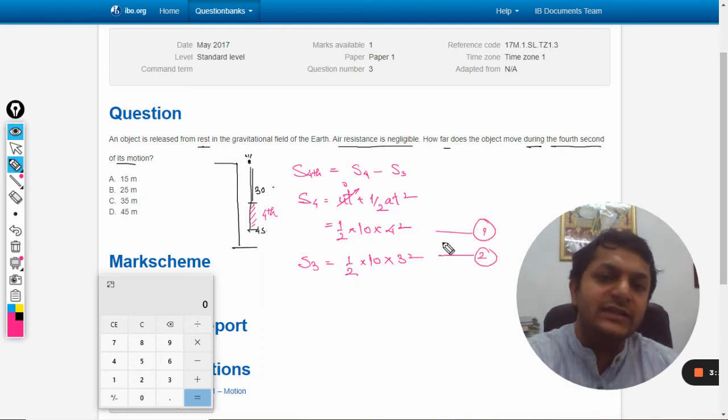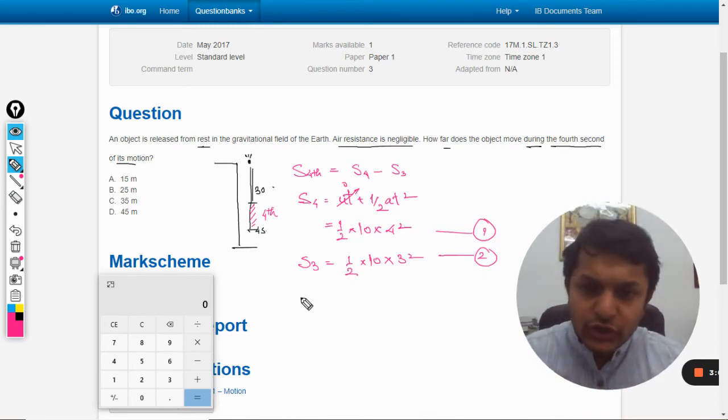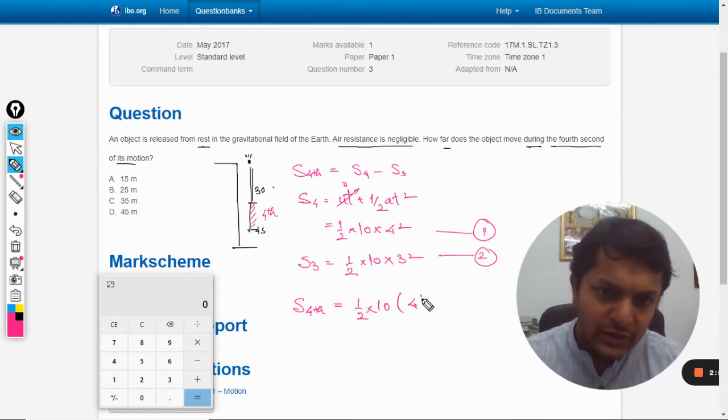What is the distance traveled in the fourth second? That will be the difference of the two. So the distance traveled in the fourth second will be ½ × 10 taken as common, 4² - 3². It is coming out to be 10/2 × (16 - 9), that is 7.